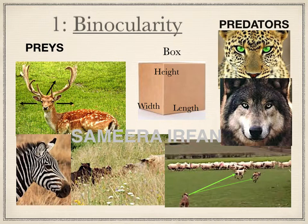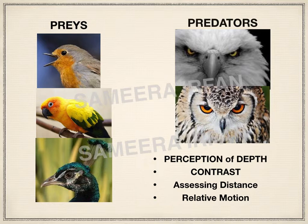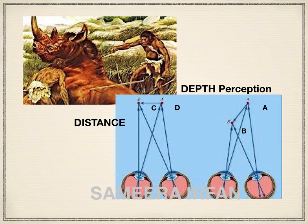On the other hand, predators like lion, tiger, and hawk have eyes on the front of their face. This gives them precise vision to focus on the target, to appreciate the depth and distance from them, so that they can adjust their speed to catch their prey. Even in the bird kingdom, front-placed eyes give predators the perception of depth, contrast, assessment of distance and speed, and relative motion.